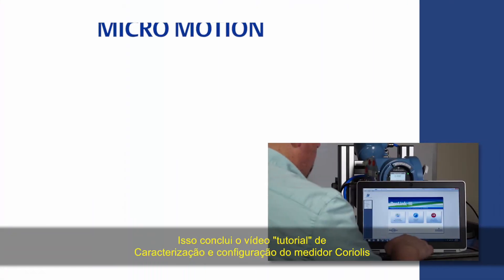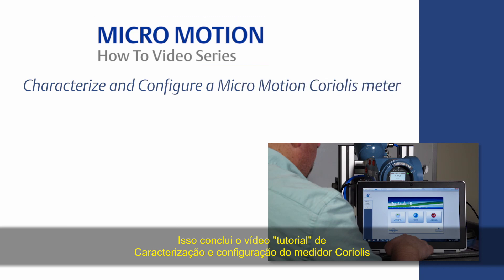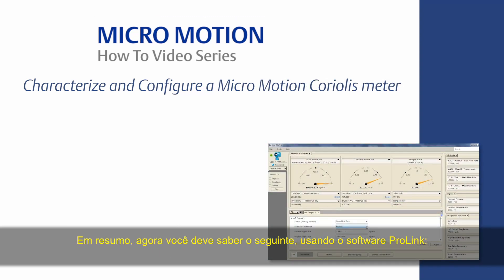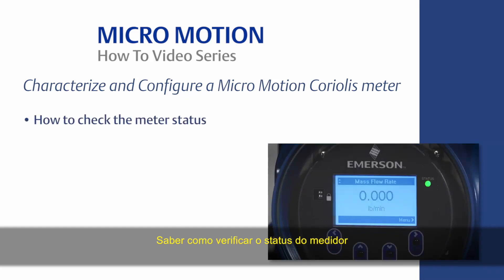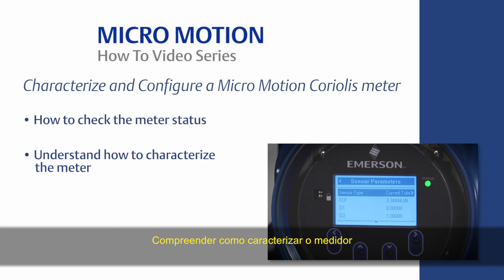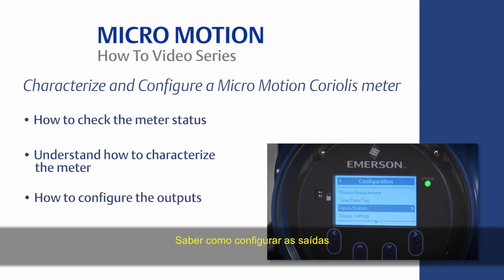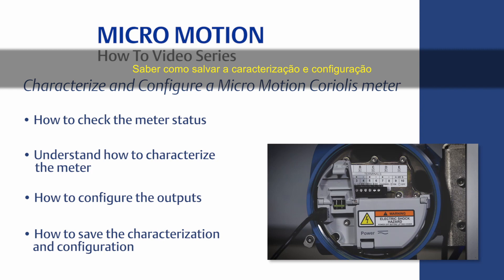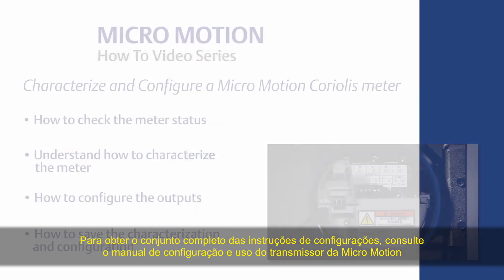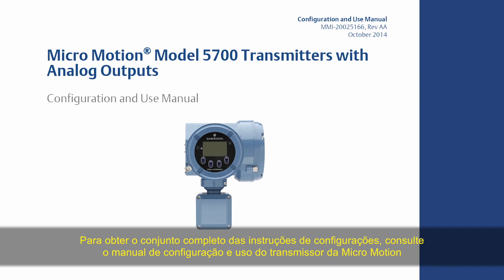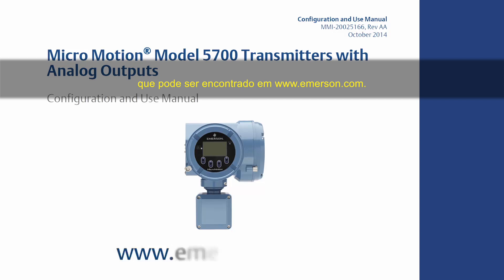This concludes the how-to video of Coriolis meter characterization and configuration. In summary, you should now know the following using ProLink software: how to check the meter status, how to characterize the meter, how to configure the outputs, and how to save the characterization and configuration. For the complete set of configuration instructions, please refer to the MicroMotion Transmitter Configuration and Use Manual, which can be found at www.emerson.com.